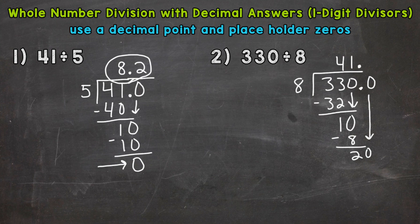So we have 20 divided by 8. How many whole groups of 8 out of 20? Two. I'll extend this again. So 2 times 8 is 16. Subtract, we get 4. So we did not get a zero. So we need to continue with placeholder zeros until we get to that zero. So let's put another zero.